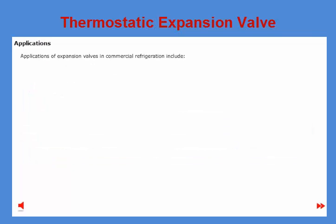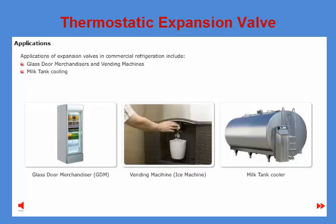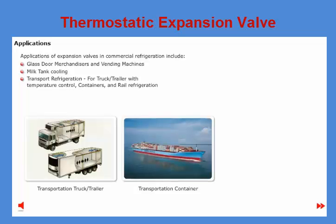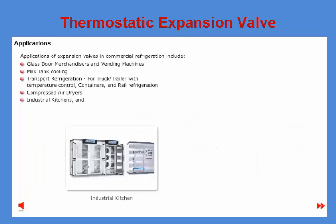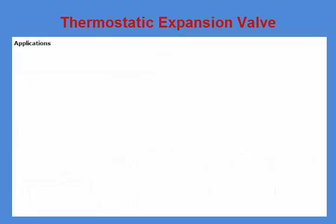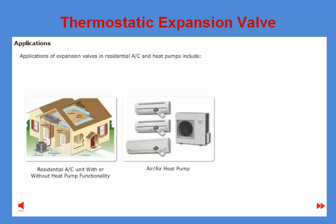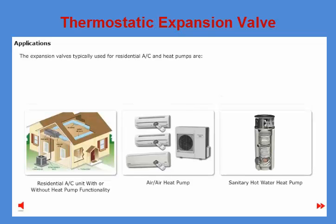Typical applications for expansion valves in the commercial refrigeration section include glass door merchandisers and vending machines, milk tank cooling, transport refrigeration for trucks or trailers with temperature control, containers, railway refrigeration, compressed air dryers, industrial kitchens, and cold rooms. The expansion valves typically used for residential AC and heat pumps include residential AC units with or without heat pump functionality, air-to-air heat pumps, and sanitary hot water heat pumps — with TU and TD1 valves typically used in this category.